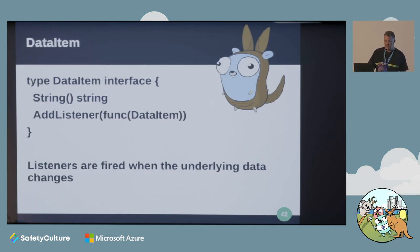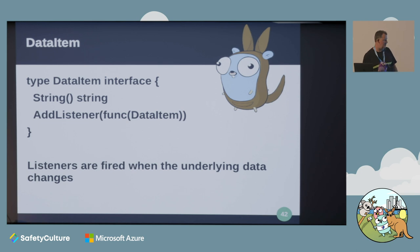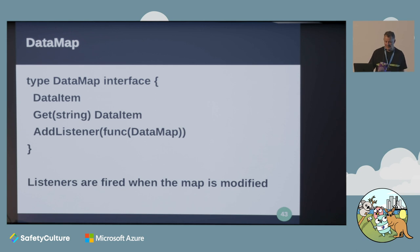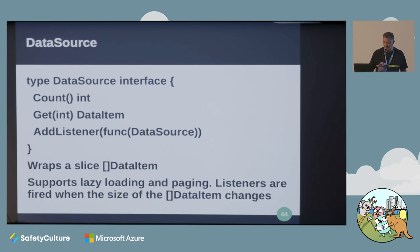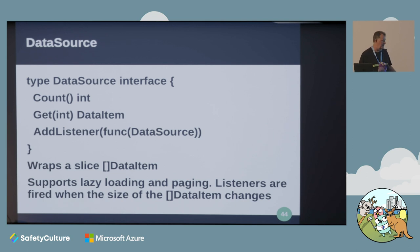A data item is any data structure that has a Stringer interface and that you can attach listeners to - every time the underlying data changes, the listeners are automatically fired. A data map is the same thing, but where the map itself is modified with entries added or removed, the listeners get fired. A data source looks like a slice of data items but supports lazy loading and pagination - modelled on the iOS data source.